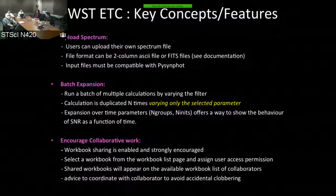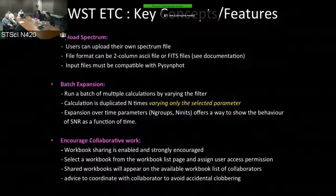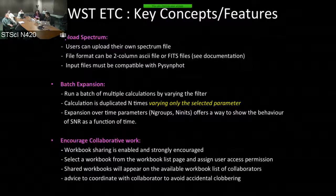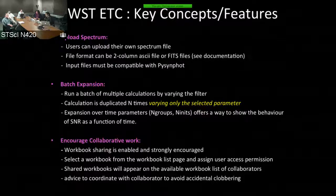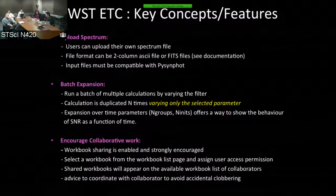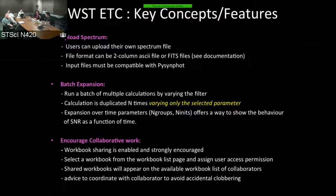A very useful feature is the batch expansion. For example, if you have set all parameters — background, detector setup, scene — and want to see how things vary by filter, you can expand by filter and it will calculate over all filters varying only that parameter. You can also expand over exposure time parameters, since exposure time can be changed either by changing the number of groups or the number of integrations. You can expand over these parameters to see how SNR changes as a function of time.